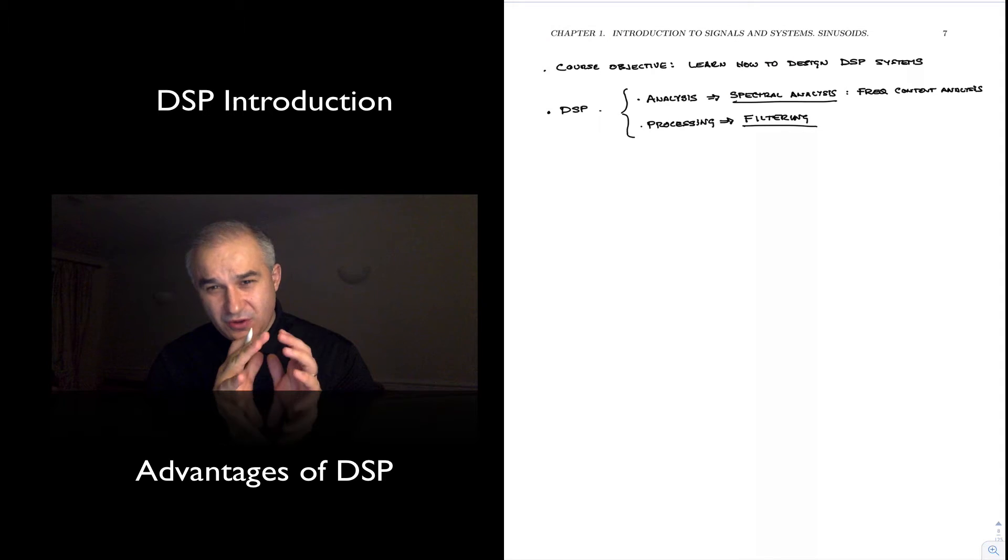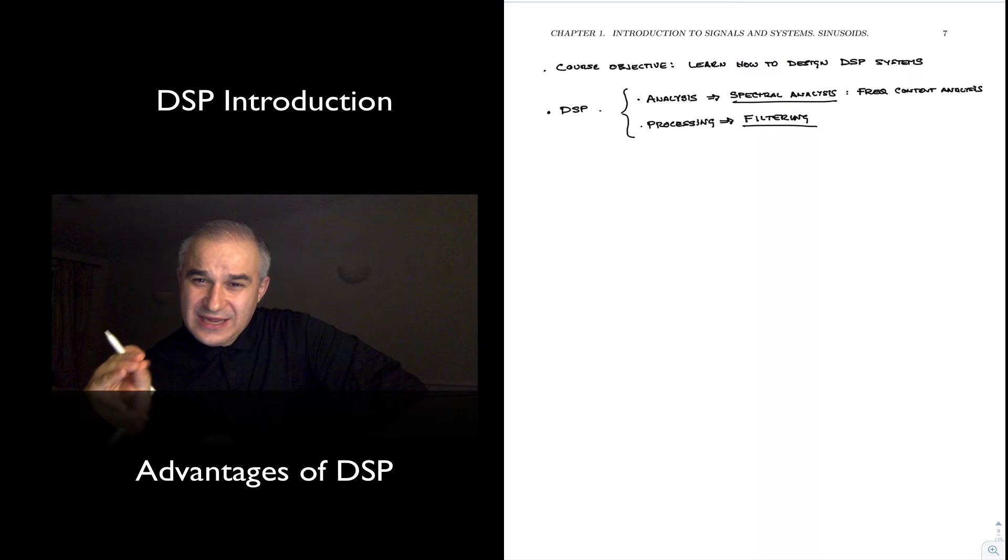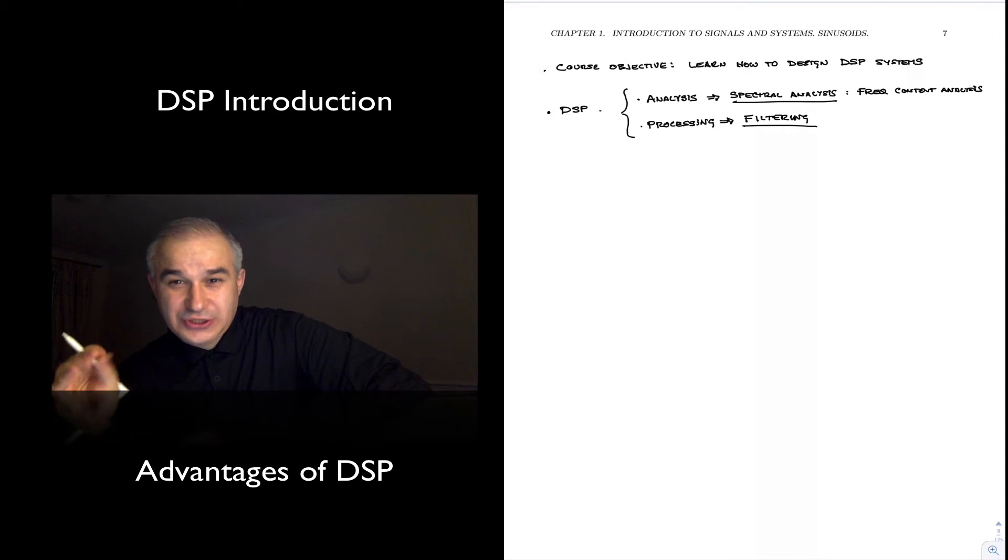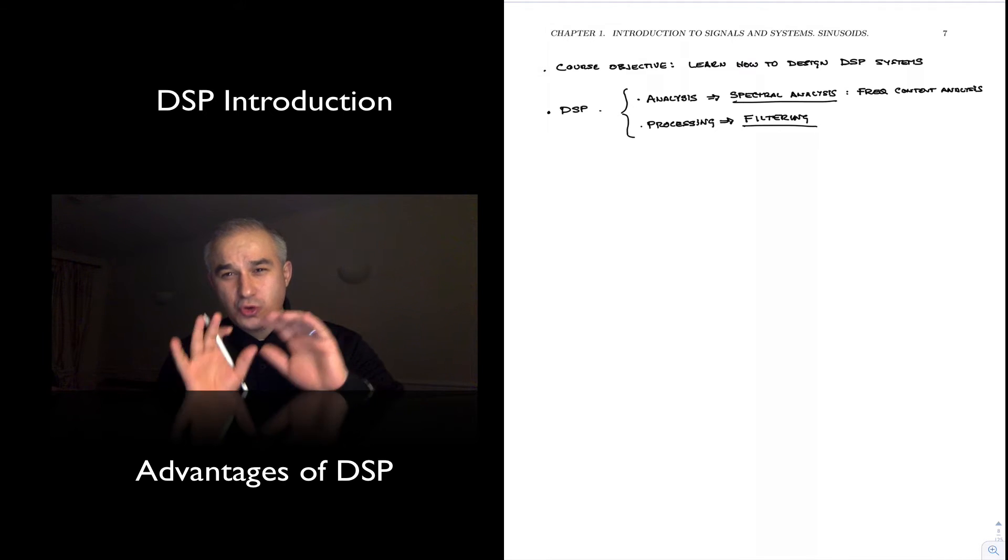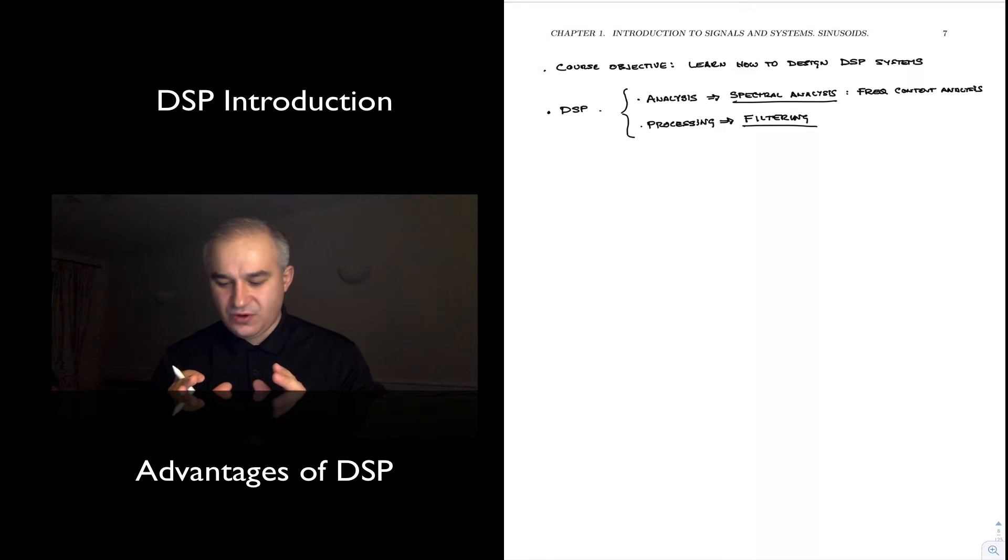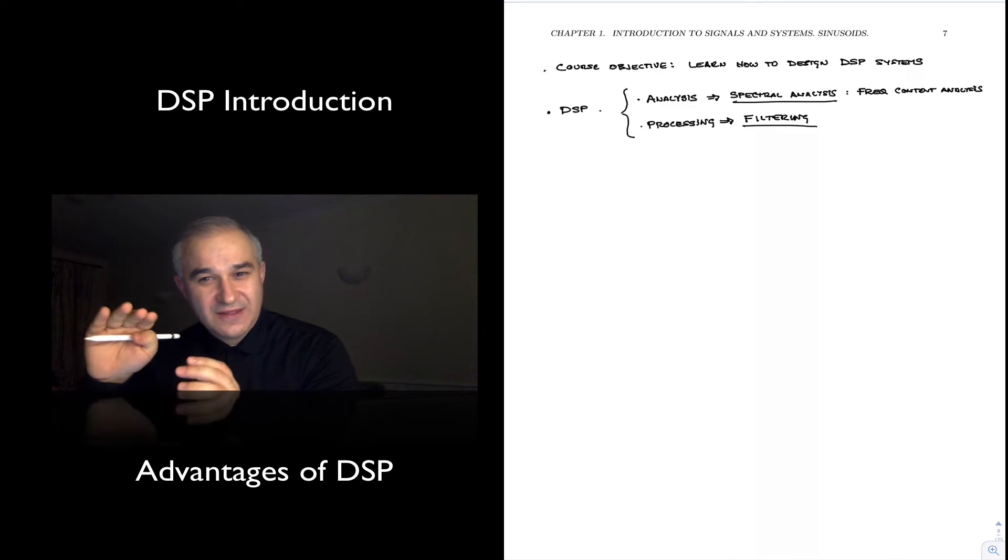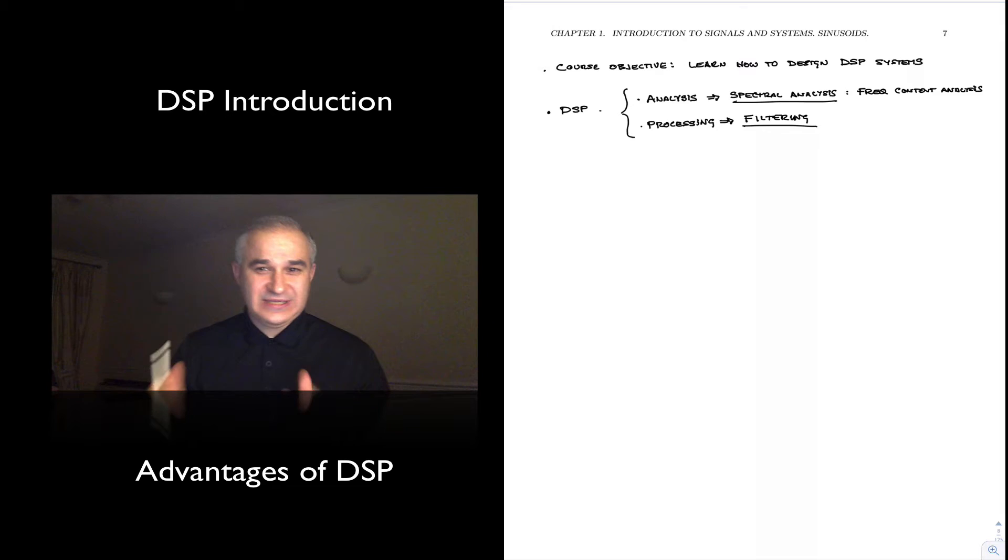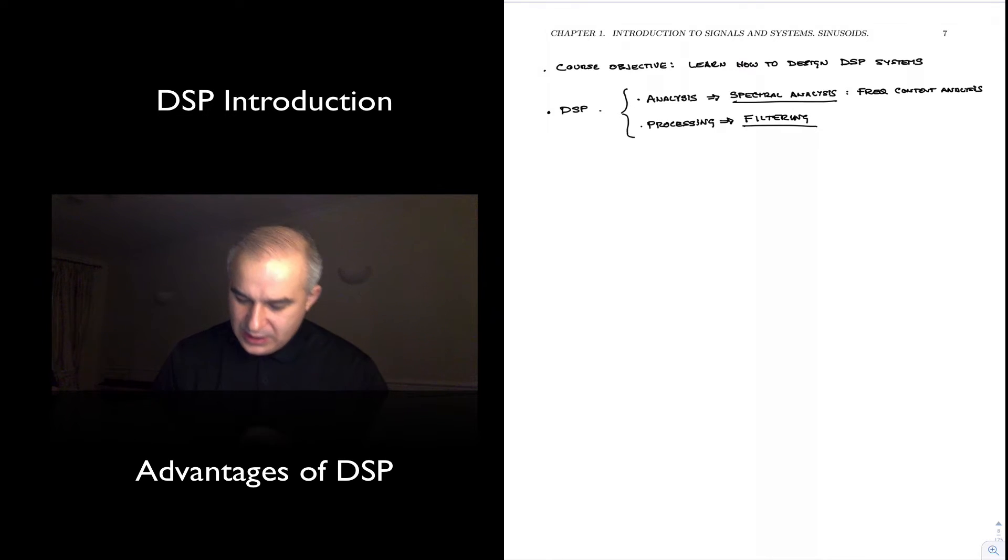So in the previous video, I went over that the objective of the course was to learn how to design DSP systems, digital signal processing systems to process signals. I also mentioned that although we are going to learn a lot of techniques, you should keep in mind that there are two main problems we are trying to solve: the problem of analysis, especially spectral analysis, looking at the frequency content of signals and systems, and then the problem of processing, how to design filters to transform the signals in the way that we want to.